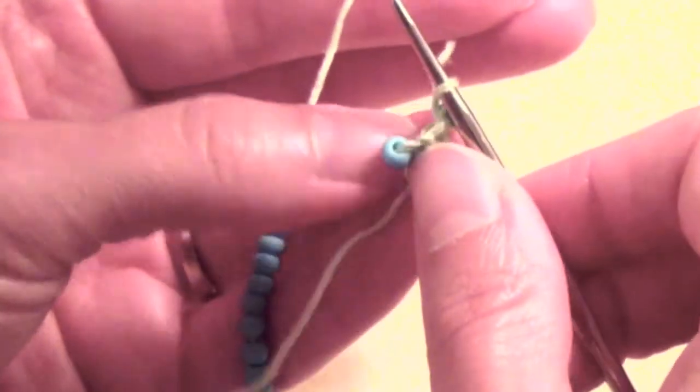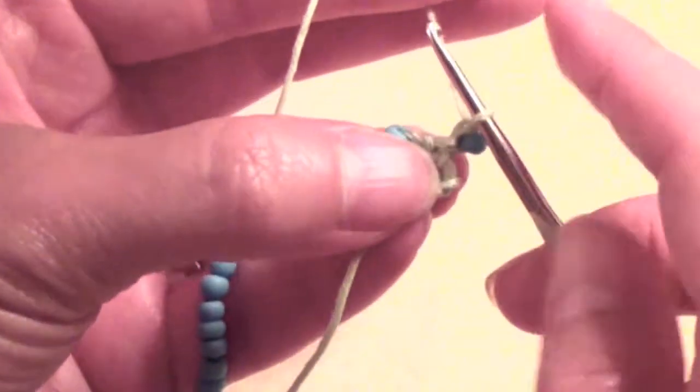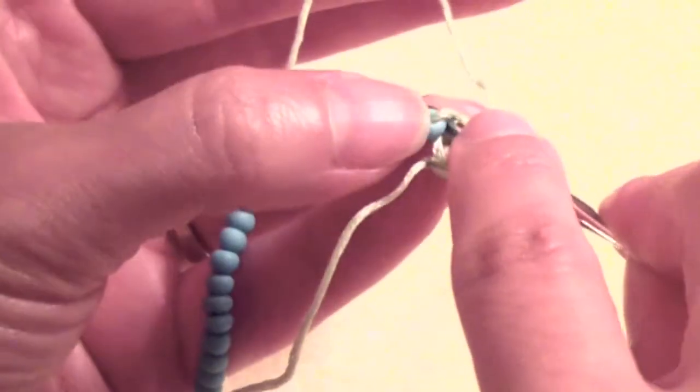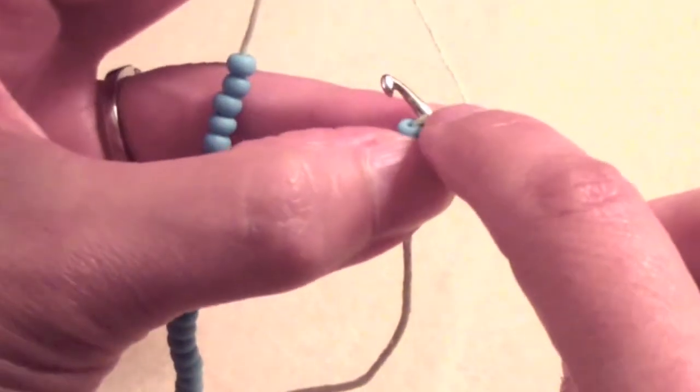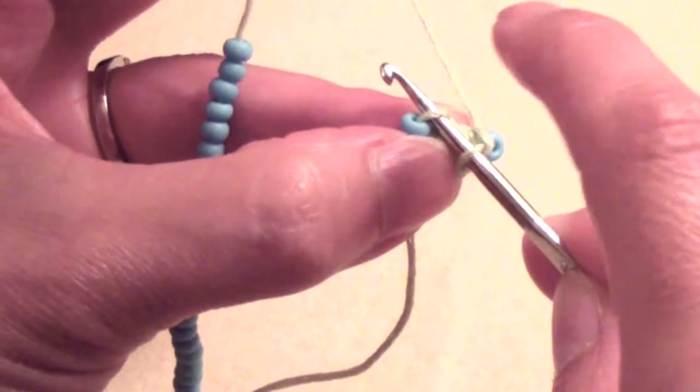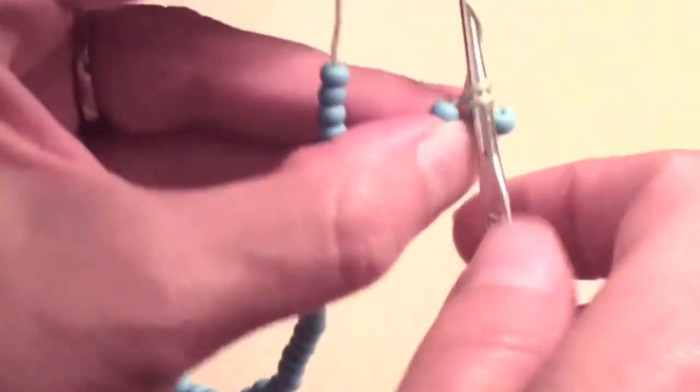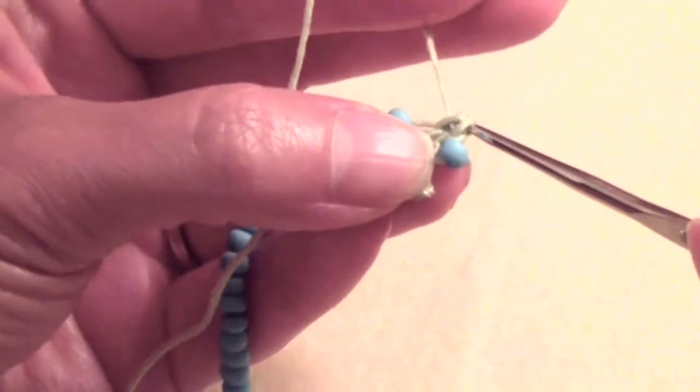Again flip the work and this time you're going to insert your hook into the thread holding the previously slip stitched bead. You're going to pull up a loop and you're going to make a single crochet stitch.